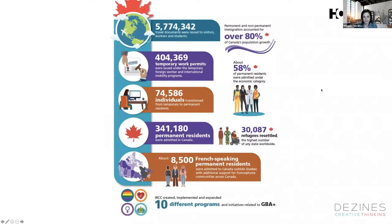Looking at 2019, the statistics are going up: 400,000 work permits, 341,000 PRs admitted into Canada. 80% of immigration are permanent and non-permanent residents. Canada is bringing people in and looking after the process. Today's session is not about how to get into Canada — it's about how to use the system to make it work for you.